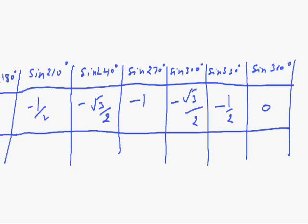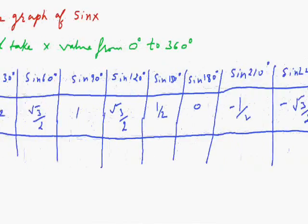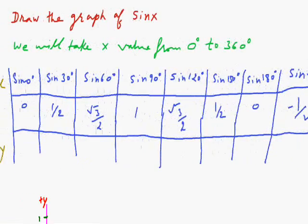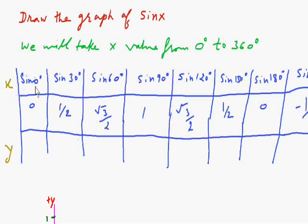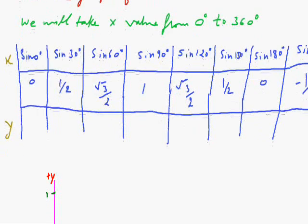So, actually this is a whole circle and same value will repeat sin 0 degree to sin 90 degree in next angles. For calculating the value of y, we just convert these values in decimal form. 1 divided by 2 is 0.5, and square root 3 divided by 2 will be 0.87.